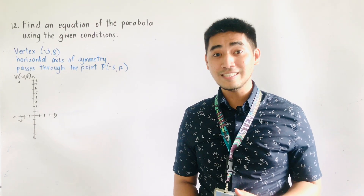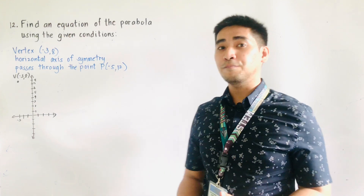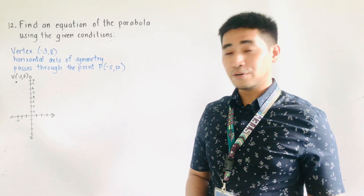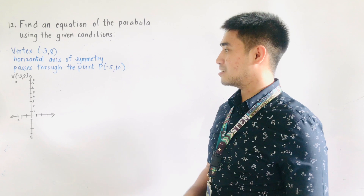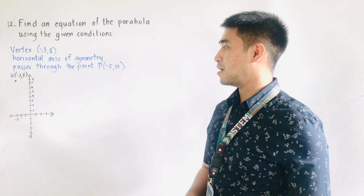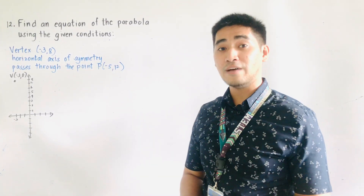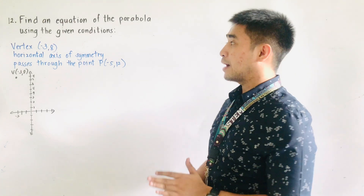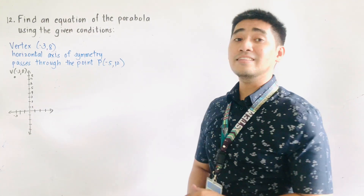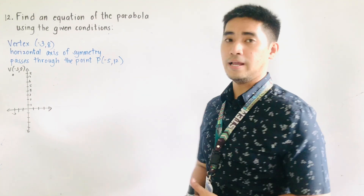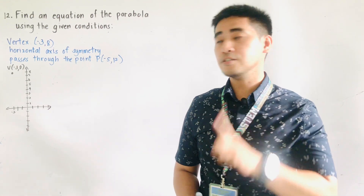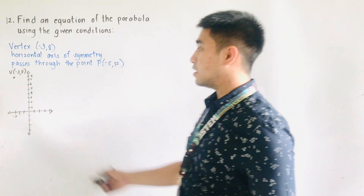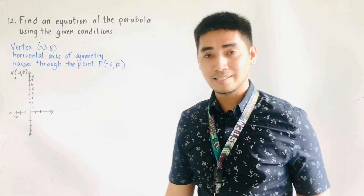We will continue what we have discussed from that. We are now given the vertex, the horizontal axis of symmetry, and it passes through the point P, negative 5 and 12. We are asked to find the standard equation of the parabola. First condition: the vertex is located at negative 3 and 8.